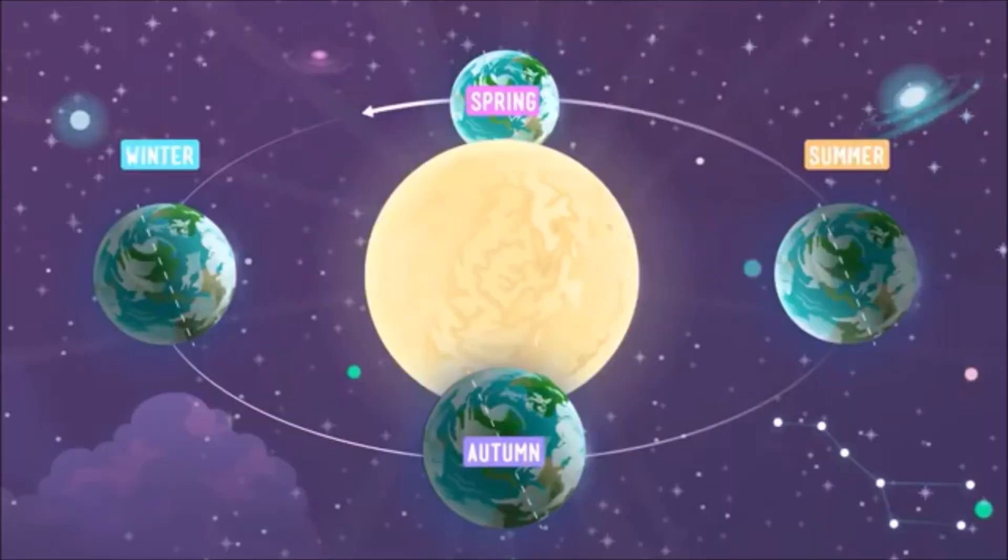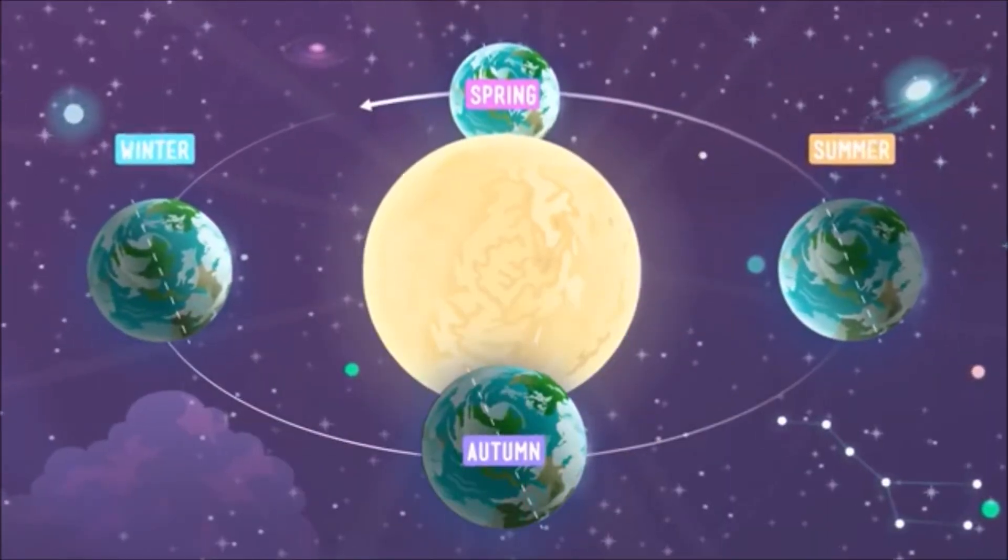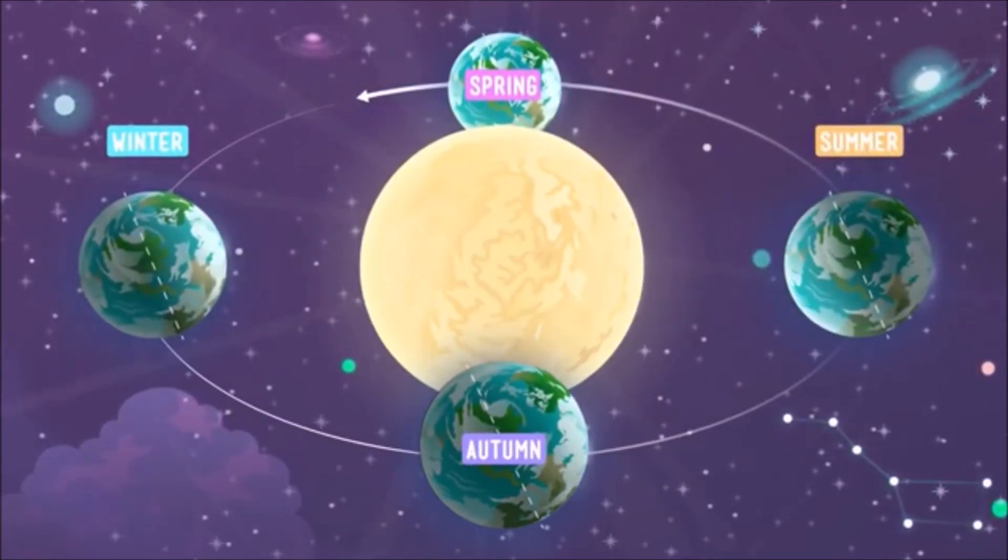But what about spring and autumn? During these two seasons, the Earth's orbit causes the northern hemisphere to be neither tilted toward the sun nor away from it. So temperatures during the spring and fall are more moderate, not too hot and not too cold, since the entire globe is getting about the same amount of direct sunlight at once.